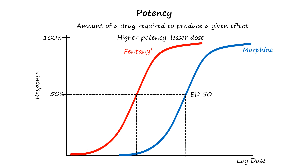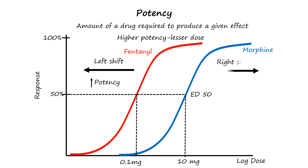The ED50 of fentanyl is 0.1 mg and of morphine is 10 mg. From the dose-response curve, we can appreciate that a more potent drug has its dose-response curve shifted to the left compared to a less potent drug.